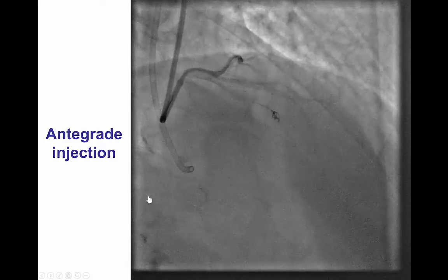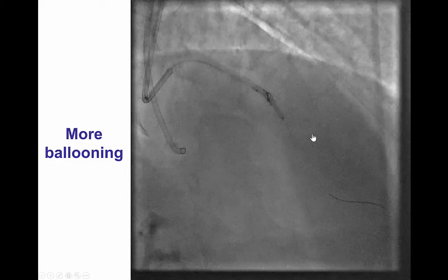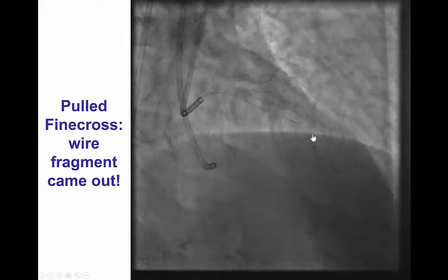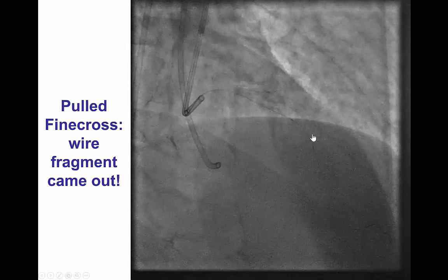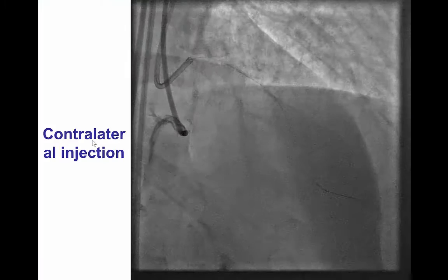After ballooning there was some antegrade flow; however, the fractured guidewire still remained. We did some more ballooning and then eventually pulled the Finecross, and to our surprise the entire system including the Finecross microcatheter and the entangled guidewire came out. This is the probably unraveled distal part of the coil of the Fielder LXT guidewire, fairly dismantled with pieces of polymer in different parts of the guidewire. It was a fortunate event that the entire guidewire fragment came out instead of getting entangled in the vessel and potentially prolapsing into the aorta, which could be a major complication.